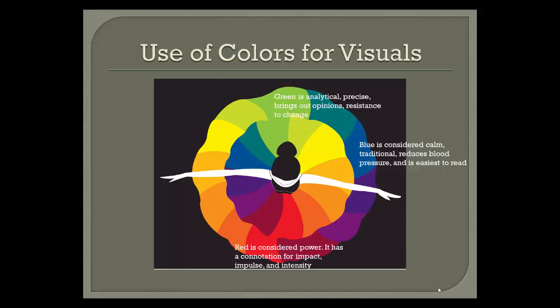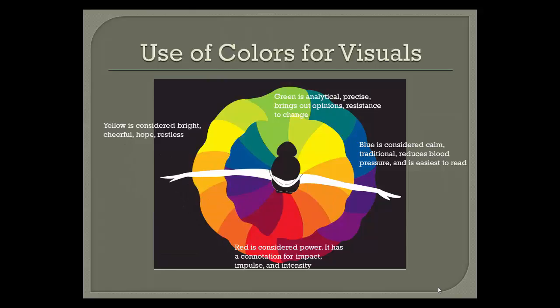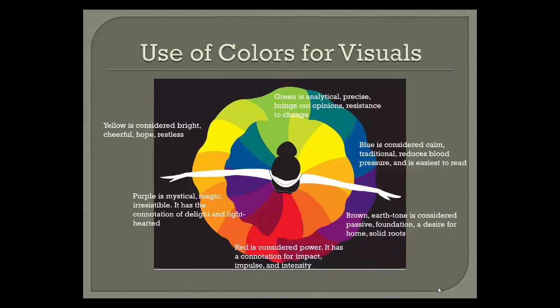Red is considered power, with connotations of impact, impulse, and intensity. Yellow is considered bright, cheerful, hopeful, and restless. Purple is mystical, magical, and irresistible — with a connotation of delight and lightheartedness. Brown or earth tone is considered passive, foundational, a desire for home and solid roots. These are a few words of direction on how to use color in a presentation, being more purposeful in the colors you choose and why.